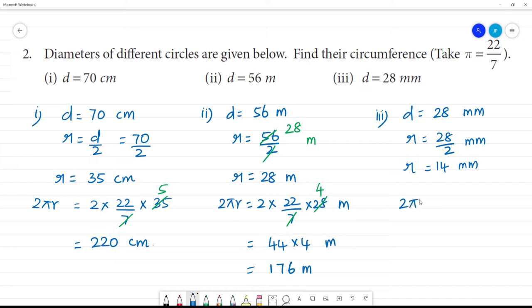Then, circumference is 2πr is equal to 2 into 22 by 7 multiplied by 14. Cancel. 1, 7 is 7. 2, 7 is 14. 1, 7 is 7. 2, 7 is 14. 2 into 22 is 44. 44 multiplied by 2 is 88. This is millimeter. 88 millimeter. Clear?